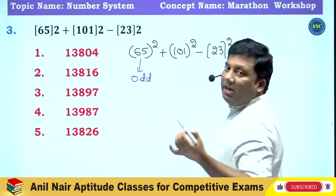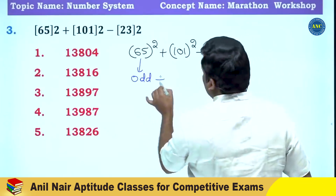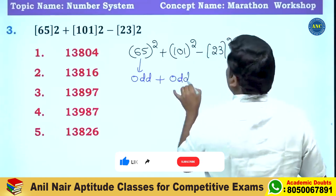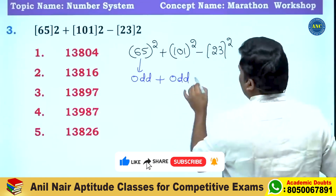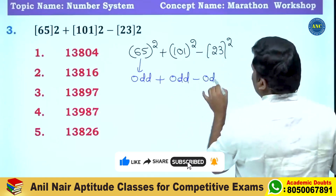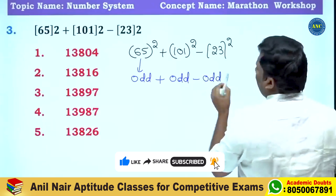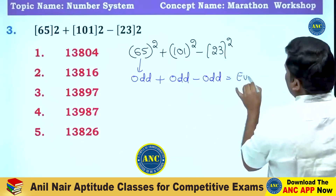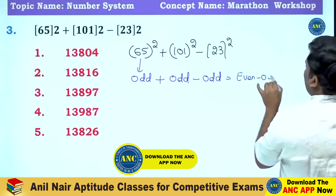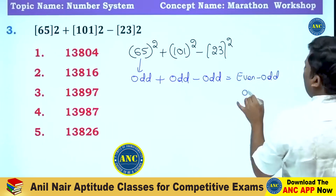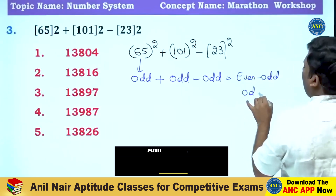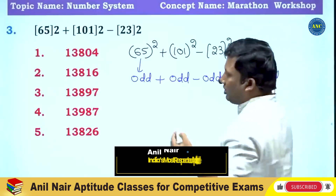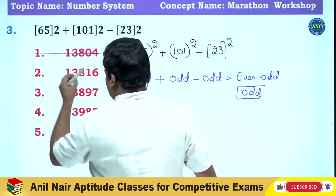65 is an odd number; odd number squared is an odd number. 101 is an odd number; odd number squared is an odd number. 23 is an odd number; odd number squared is an odd number. Odd plus odd is even, even minus odd is odd — so the answer should be an odd number.